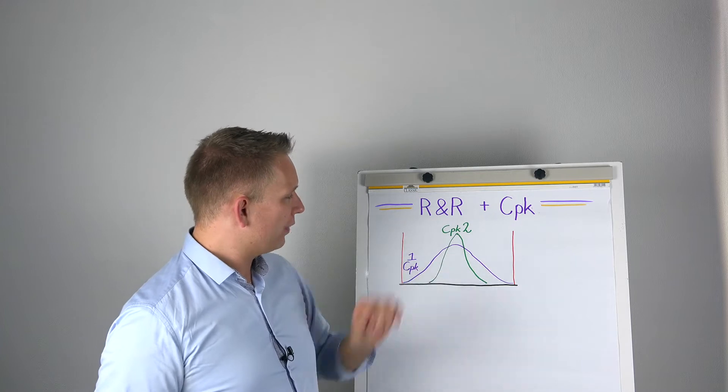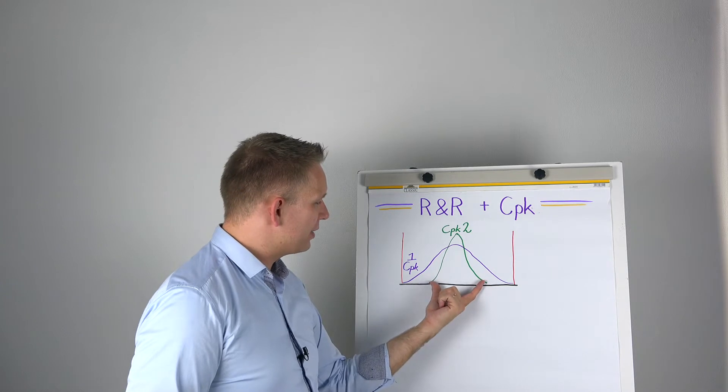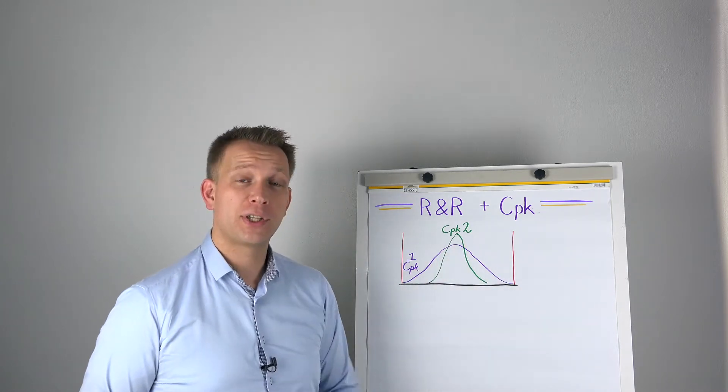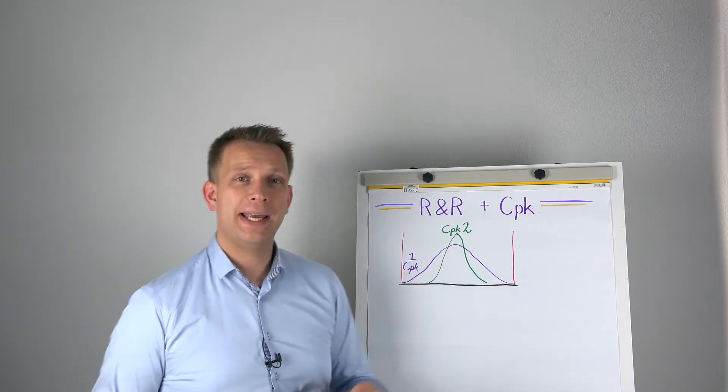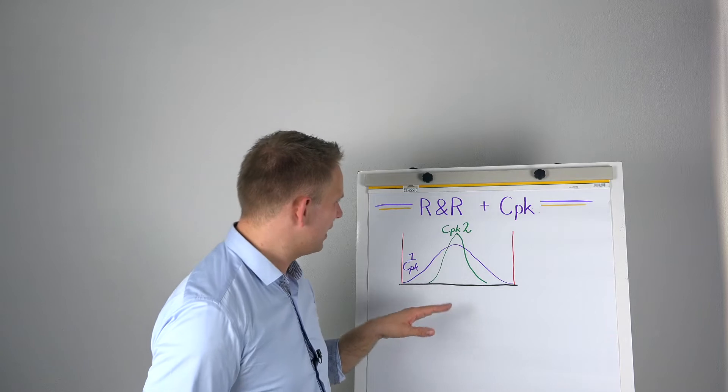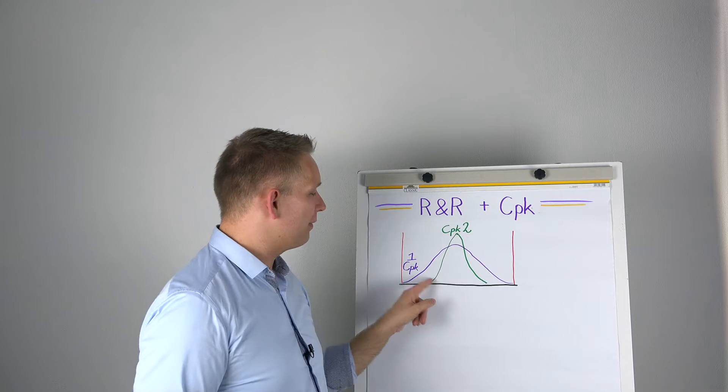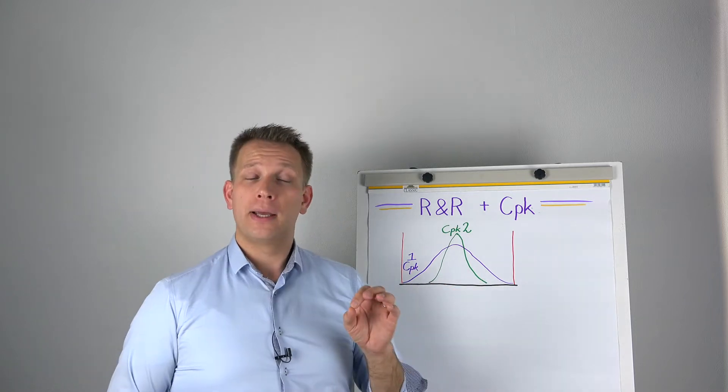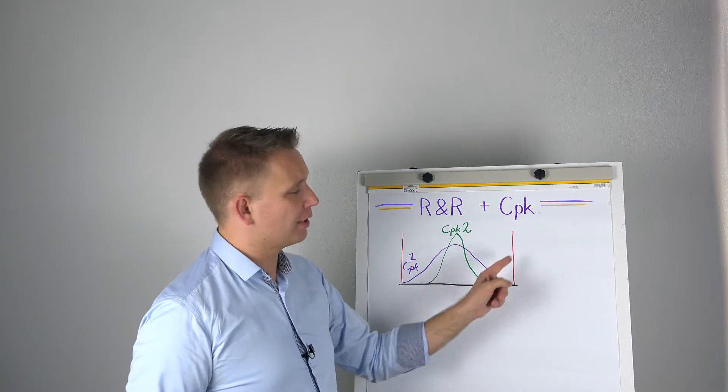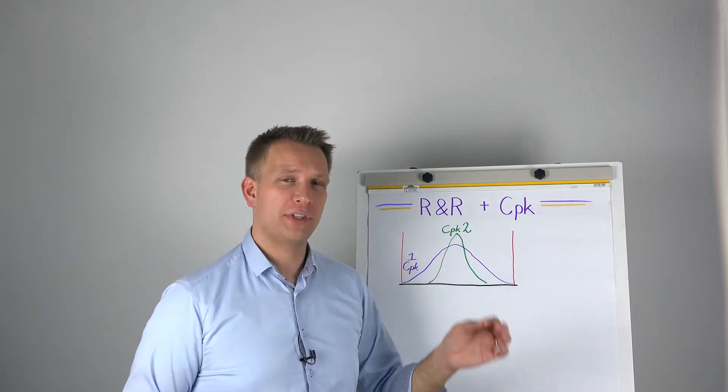The green process, it is much tighter. In fact, it is so tight that this here, it can fit within my specification limits twice. So this has a process capability of two. Now you might say it's not fully centered, so it should be a bit less, but that's just my drawing. It means that we have quite a lot of wiggle room. Another way of looking at it is that from the mean, there are six standard deviations points before we hit any of the tolerance limits.